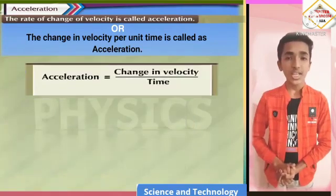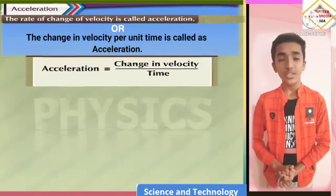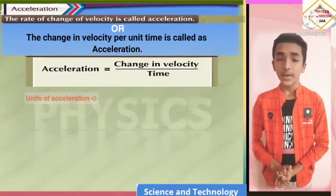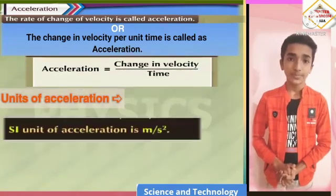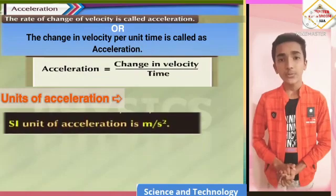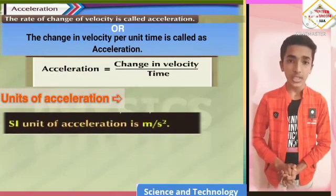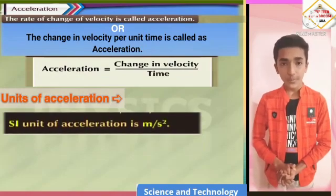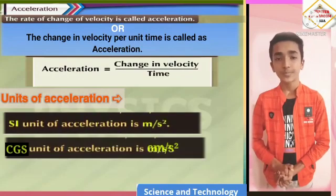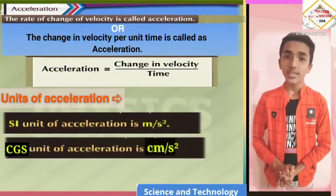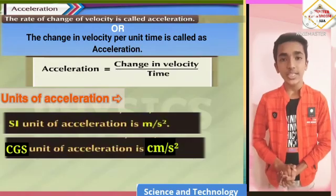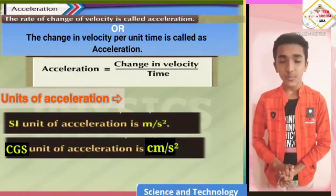Since acceleration is the changing velocity divided by time, the SI unit of acceleration is meter per second square, whereas the CGS unit is centimeter per second square.